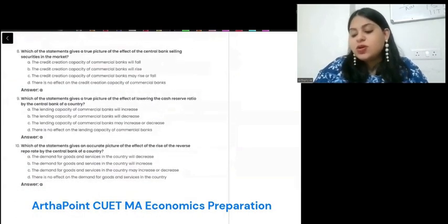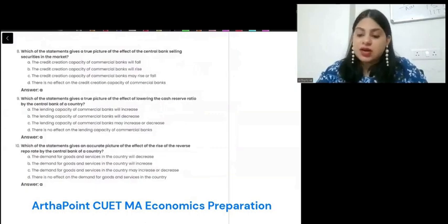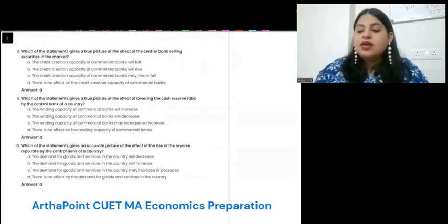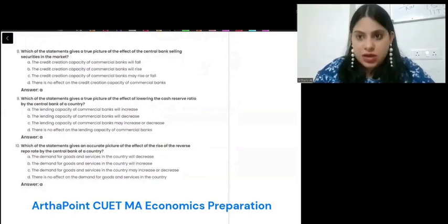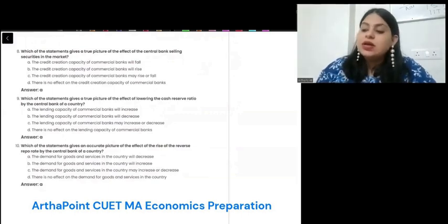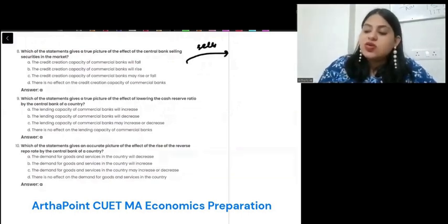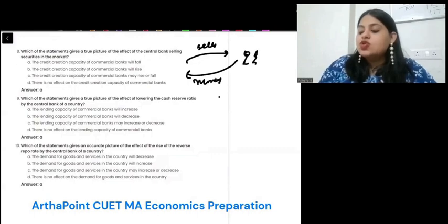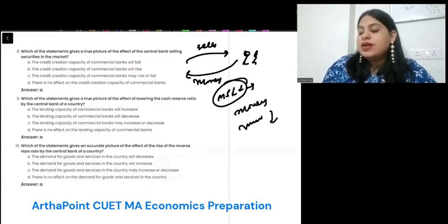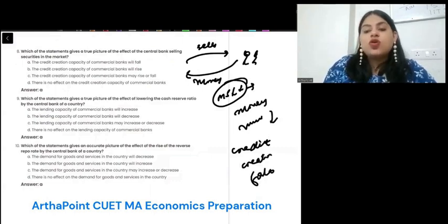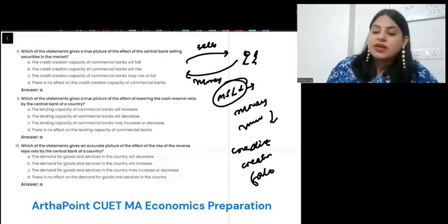Which of the following statement gives a true picture about the effect of the central bank selling securities in the market? When the central bank sells securities, in return it takes money from the public, so money supply reduces. From the money multiplier effect, credit creation reduces and falls. So the first option is correct: the credit creation capacity of commercial banks will fall.